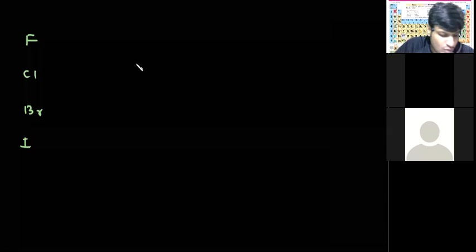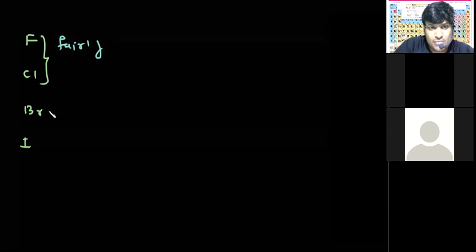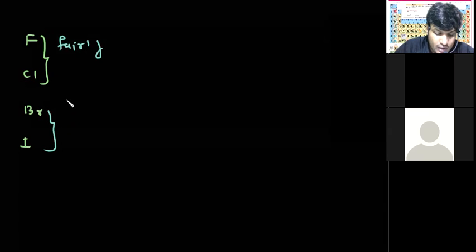So, what is it? Okay, it's very abundant. It's fairly abundant. When it's bromine and iodine, it's very low.